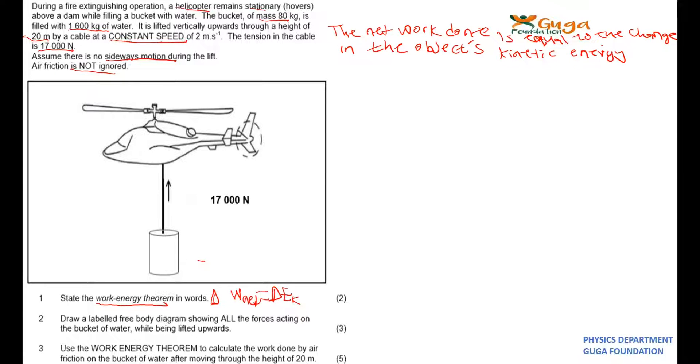The second question is to draw a free body diagram of all the forces acting on the bucket of water. So on number two, you would have a point there. You've got the tension pulling up the box, so you have got a tension.